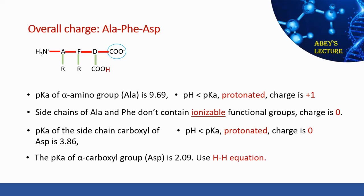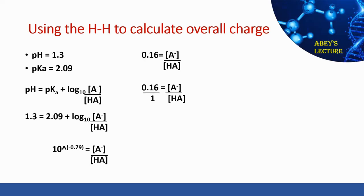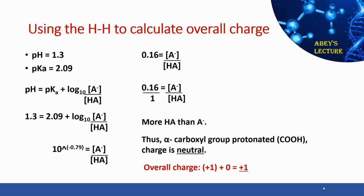From the pKa table, the pKa for the alpha carboxyl group of aspartic acid is 2.09. Since the pH (1.3) and the pKa (2.09) are within one unit of each other, we use the Henderson-Hasselbalch equation. Substituting the values and simplifying gives [A⁻]/[HA] = 0.16, meaning for every one protonated form there are 0.16 deprotonated forms. The carboxyl group mostly exists in the protonated COOH form, so it is neutral with a charge contribution of zero.